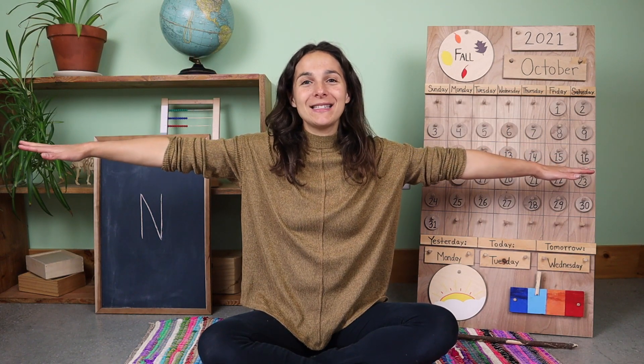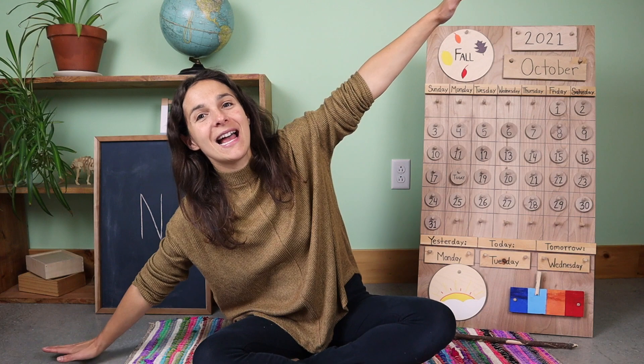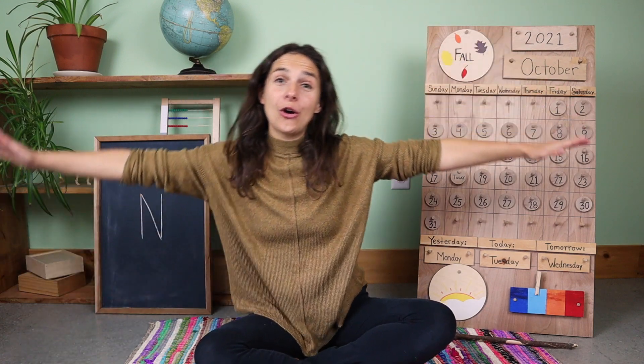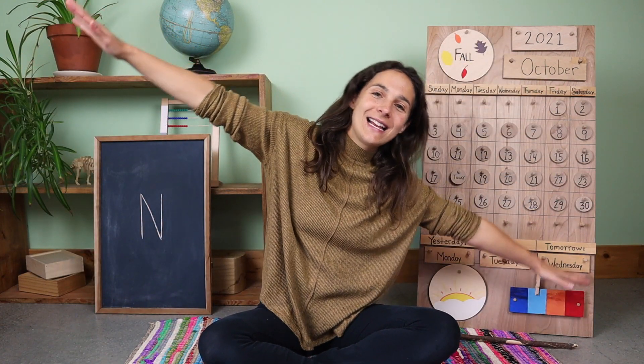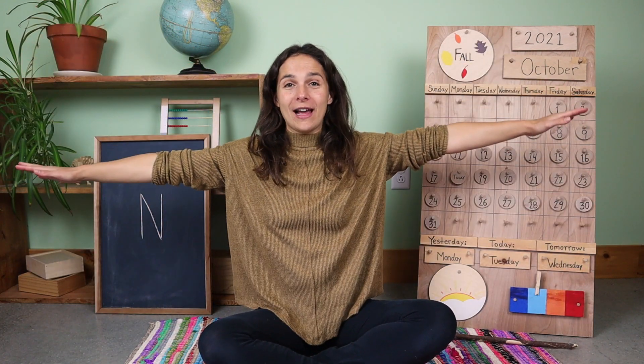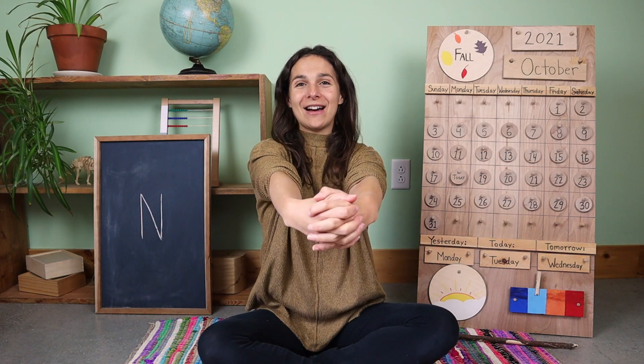Hello everyone and welcome back to Unbound Learners Pre-K. How are you doing today? That's good to hear. It's time to sing our good morning song together. So stretch your arms out like airplane wings and we'll fly to one side, over to the other side, fly back to the middle, big stretch out in front.